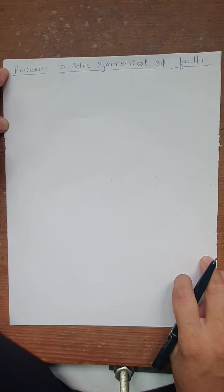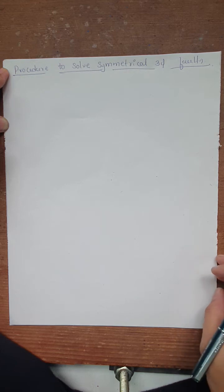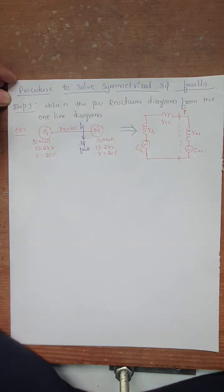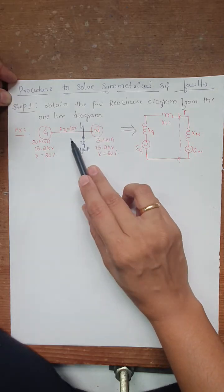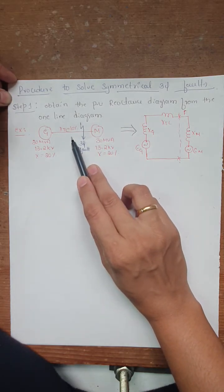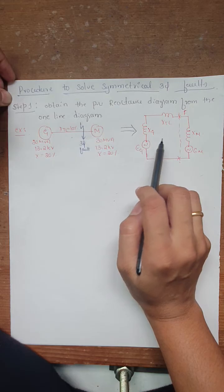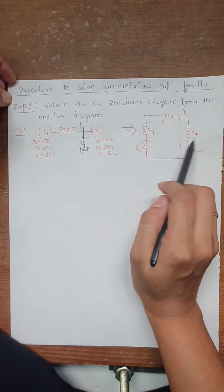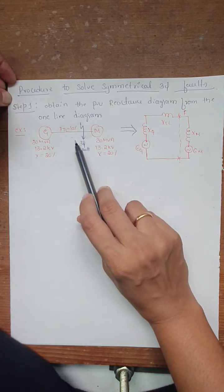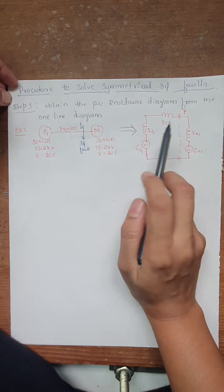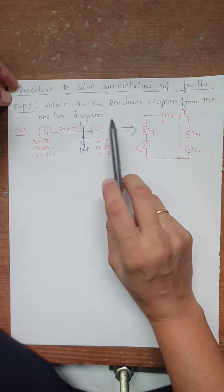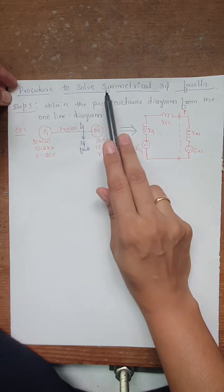We will now see the first step: obtain the per unit reactance diagram from a one-line diagram. This one-line diagram we need to convert into a per unit reactance diagram. In Module 1 we saw there are five steps for converting this into a reactance diagram, and that entire five steps will come in the first step itself in Module 2.